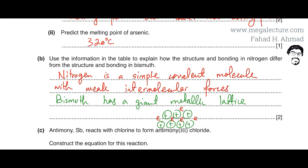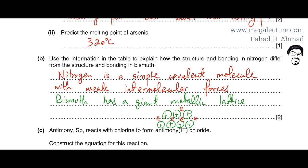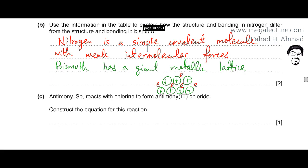Bismuth, on the other hand, has a giant metallic lattice where positive ions sit in a sea of free-moving delocalized electrons. Since this is a two-mark question, we don't need extensive detail: nitrogen is a simple covalent molecule, and bismuth has a giant metallic lattice.